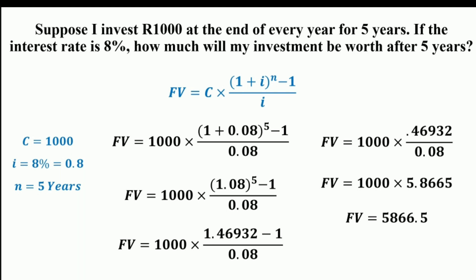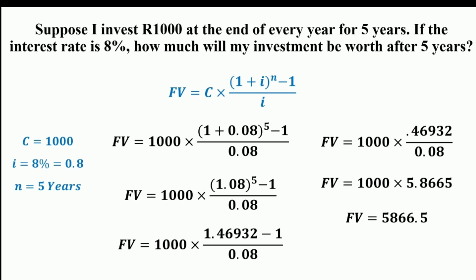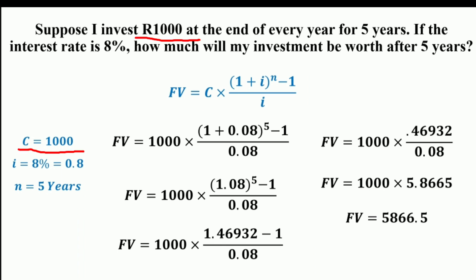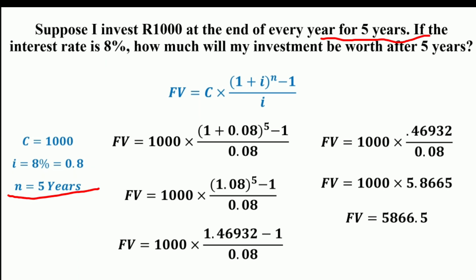Let us consider one example. Suppose I have invested rupees 1,000 at the end of each year for 5 years. If the rate of interest is 8%, how much will my investment be worth after 5 years? We want to find the future value of this investment of rupees 1,000 over 5 years. The future value equals C × [(1 + i)^n − 1] / i. From the given question: C = 1,000, i = 8% = 0.08, and n = 5.